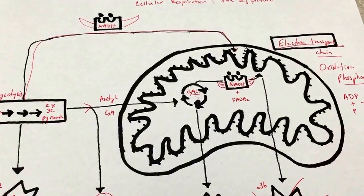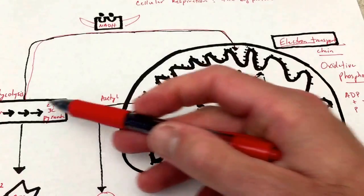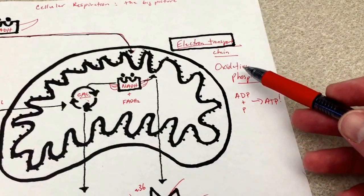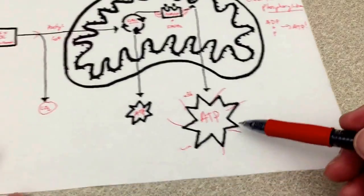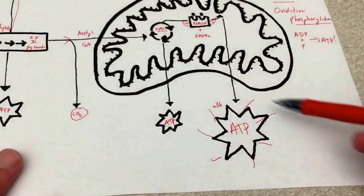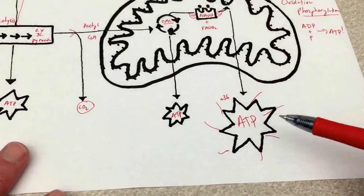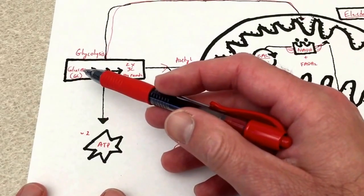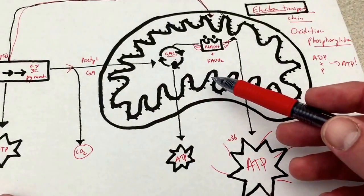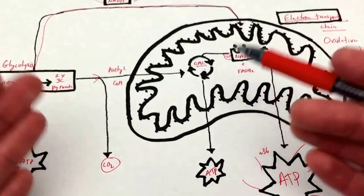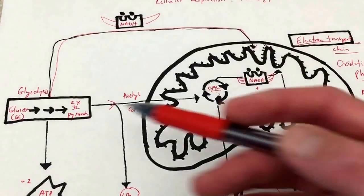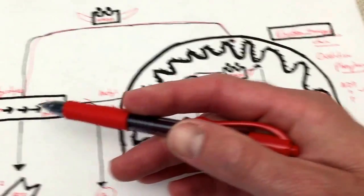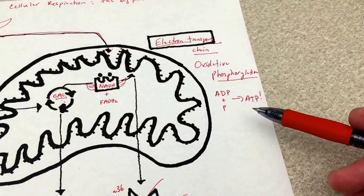So there you have it — our three processes: glycolysis, the citric acid cycle, and the electron transport chain with oxidative phosphorylation, to give us about 38 to 40 ATPs per glucose molecule that's broken down. That is how we harness the electrons from glucose to power ATP synthesis.